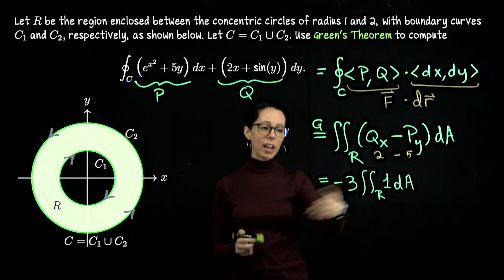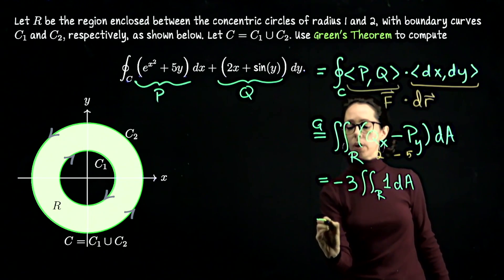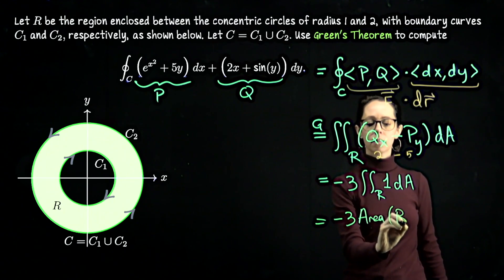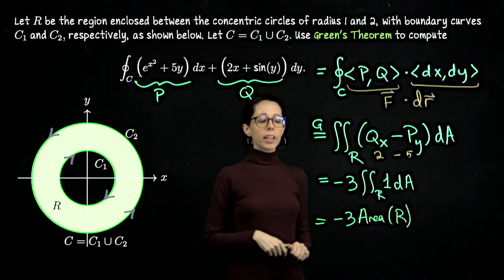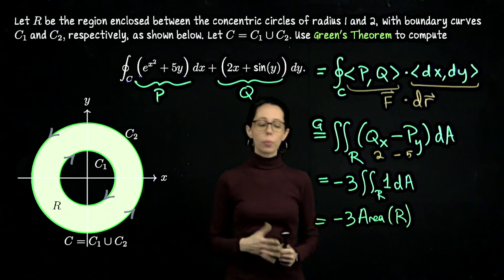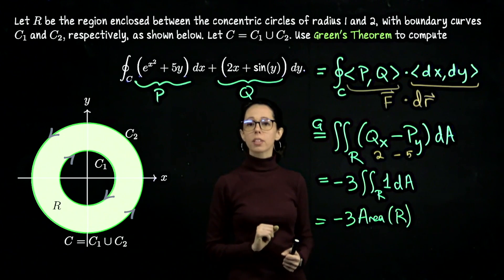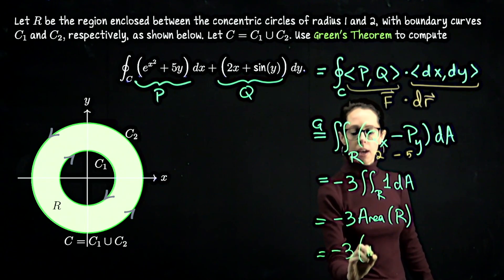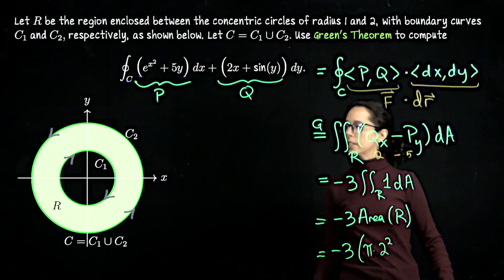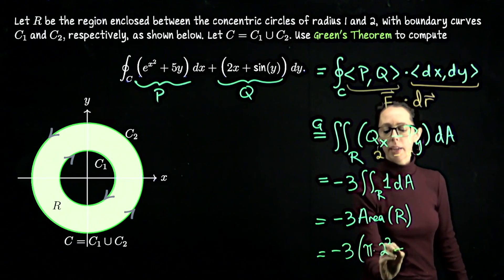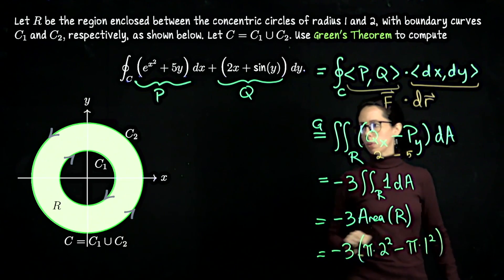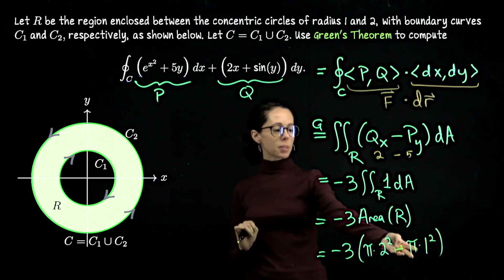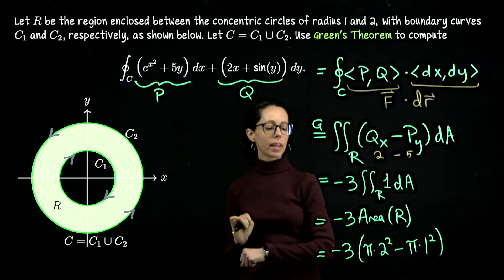But in this particular case it's very nice. We are really looking for negative 3 times the area of R. The area between concentric circles we can compute by doing the larger area and then taking away from that the smaller area. So this is like negative 3 times π times 2 squared. That's the entire disk of radius 2 minus π times 1 squared. So larger circle take away the interior circle. Overall that's going to be 4π minus π is 3π times negative 3 is negative 9π.